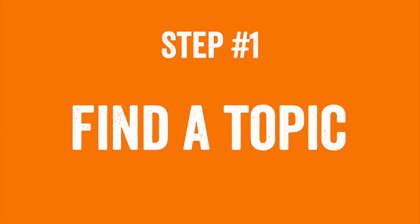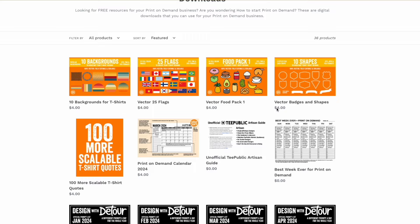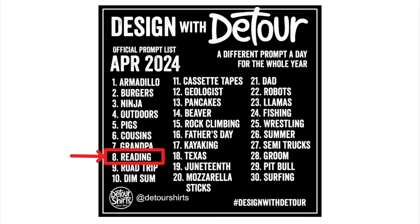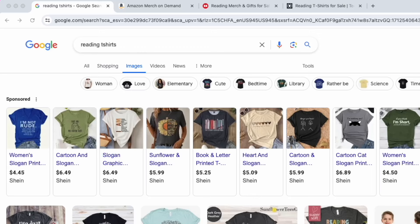There are a bunch of steps I do, but the first step is to find the topic. I mentioned Design with Detour before — you can look at that, I have a free download on my downloads page. You can pick any topic you want, but in this case I'm going to use the topic from the prompts, which is reading. That's the very first step.